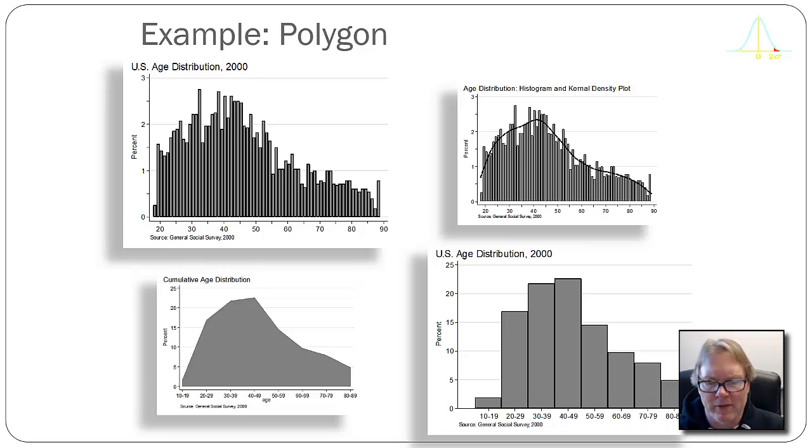Another very popular kind of representation of the data is a frequency polygon. And that's what I'm showing in the lower left. Basically, it takes the bars and kind of converts them to an area.